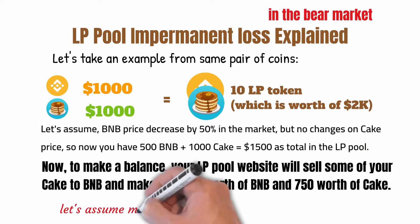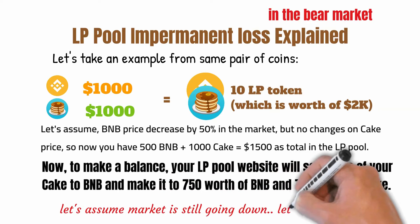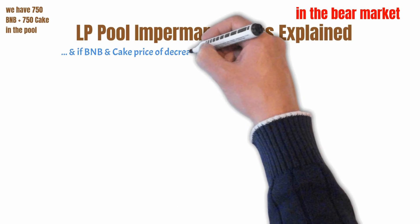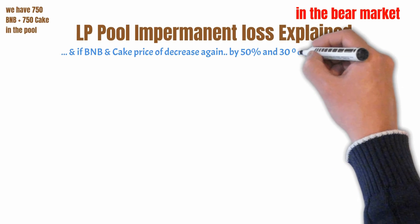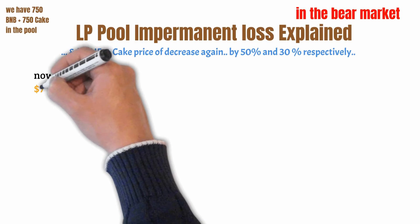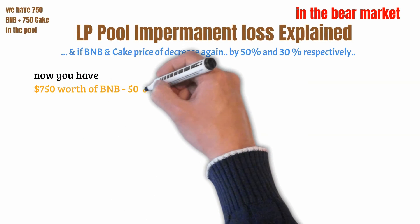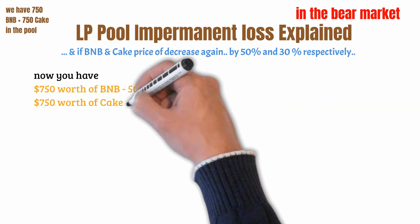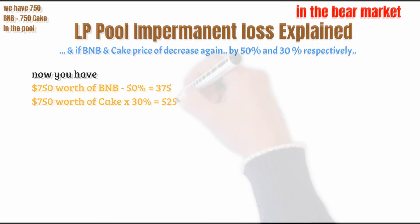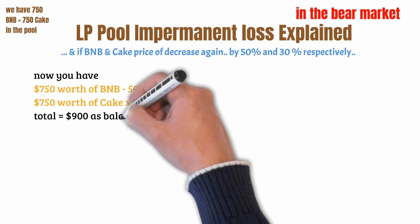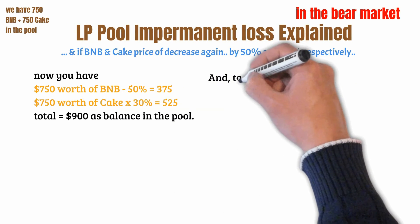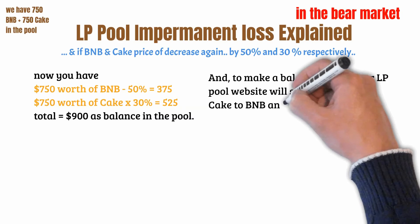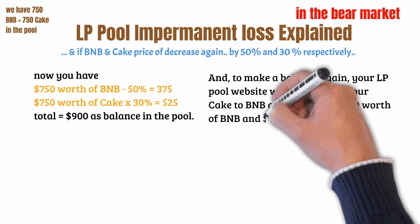This is not over yet. Let's assume the market is still going down. If BNB and Cake price decrease again by 50% and 30% respectively, you now have $750 worth of BNB decreased by 50% to $375, and $750 worth of Cake decreased by 30% to $525, for a total of $900 in the pool. To make a balance again, your LP pool website will sell some Cake for BNB, resulting in $450 worth of BNB and $450 worth of Cake.